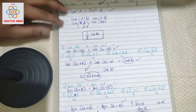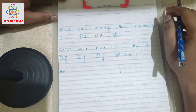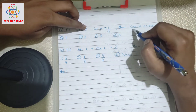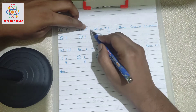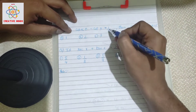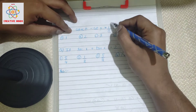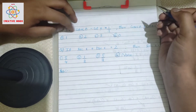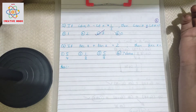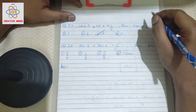Next important model: if cosecθ minus cotθ = 1/√3, find cosecθ plus cotθ. Notice that one has minus and the other has plus — this is like an inverse case. So if cosecθ minus cotθ = 1/√3, then cosecθ plus cotθ = the inverse of 1/√3, which is √3. The answer is option C. Just by keen observation you can answer within seconds.